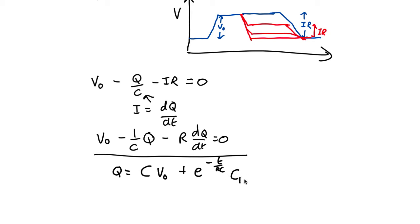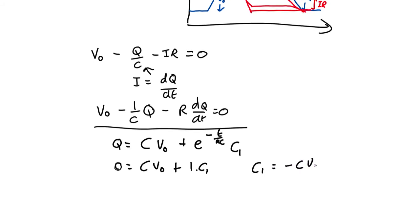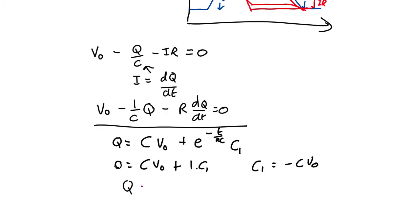Now the way you work out these constants is by looking at the initial conditions. As we're starting at time t equals zero with a charge q equals zero. e to the minus zero is one. So that tells us that zero equals C V0 plus e to the minus one times C1. So C1 equals minus C V0. And our overall equation is going to be that Q equals C V0 times 1 minus e to the minus one over CR t.